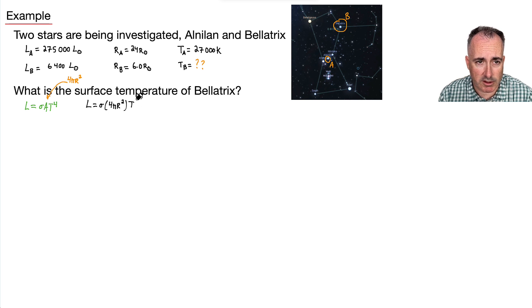It's going to go L equals, I'll just write it down like this actually. So we have L equals sigma times 4 times pi times R squared, all that times T to the fourth. This is my generic equation then that I need to figure out.